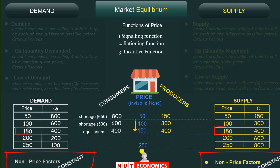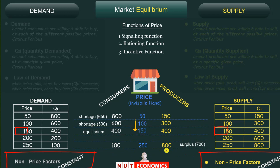Now consider starting with a very high price of 250. If a product is too expensive, consumers will leave the market and buy less — in this case, only 100 ice creams. Meanwhile, producers love to produce at this price because of the high profits, so quantity supplied is 800. This creates a surplus of 700 ice creams — more have been produced than consumers want to buy.